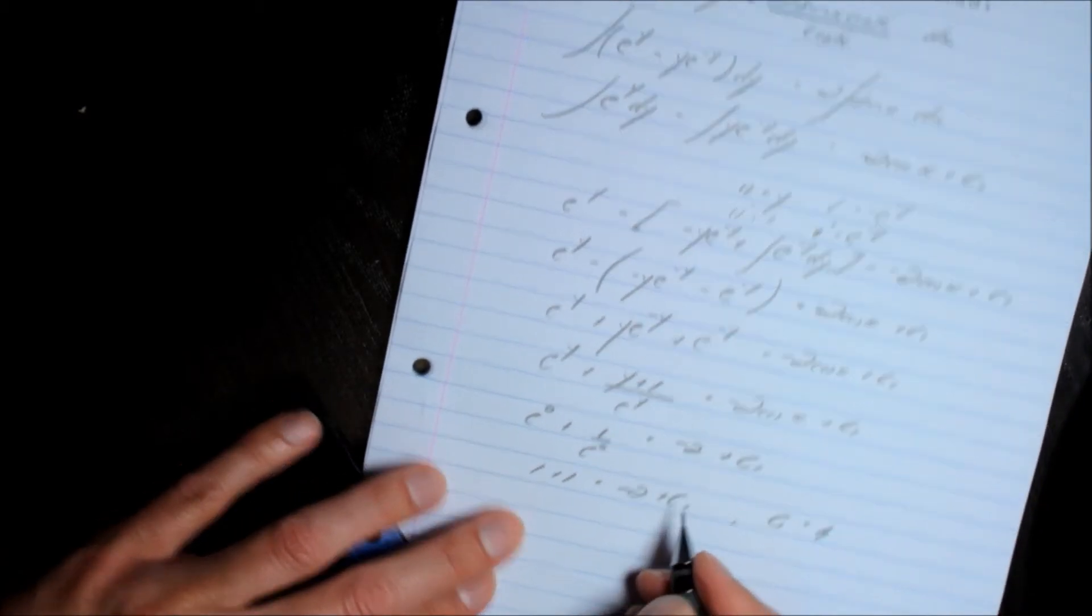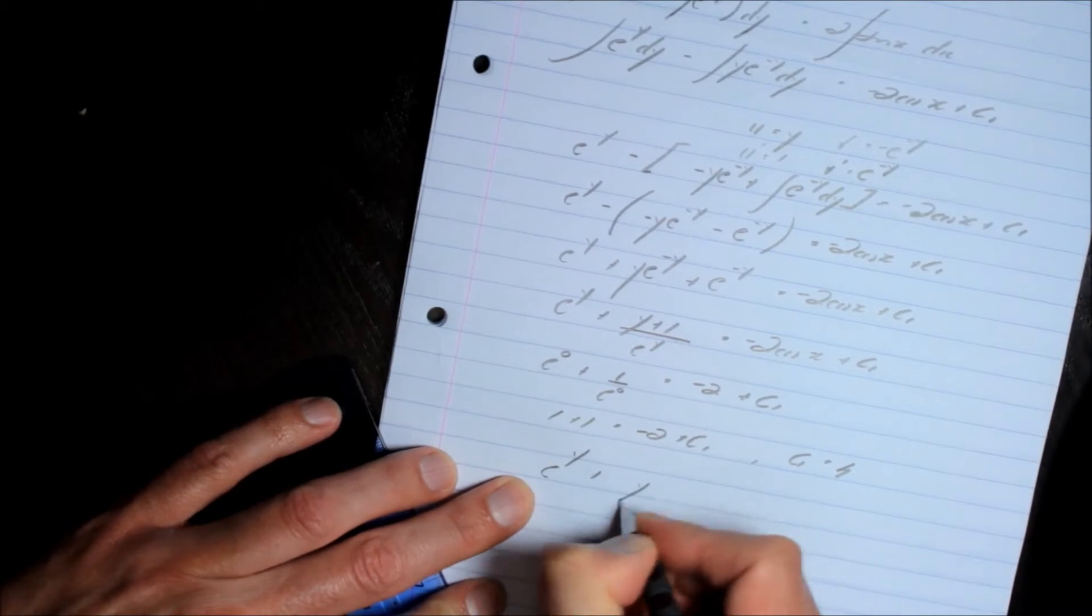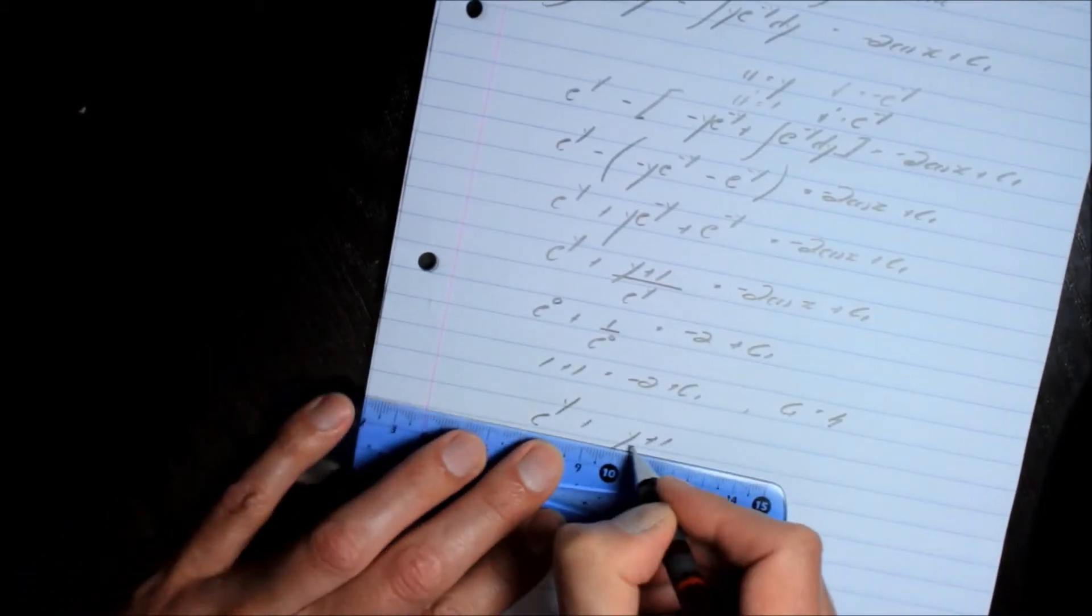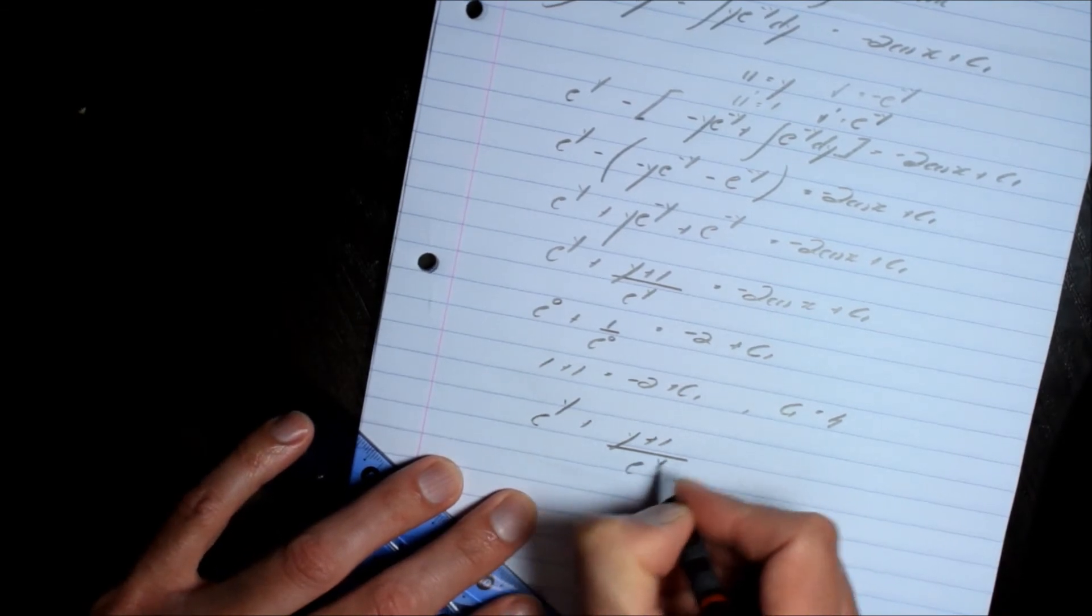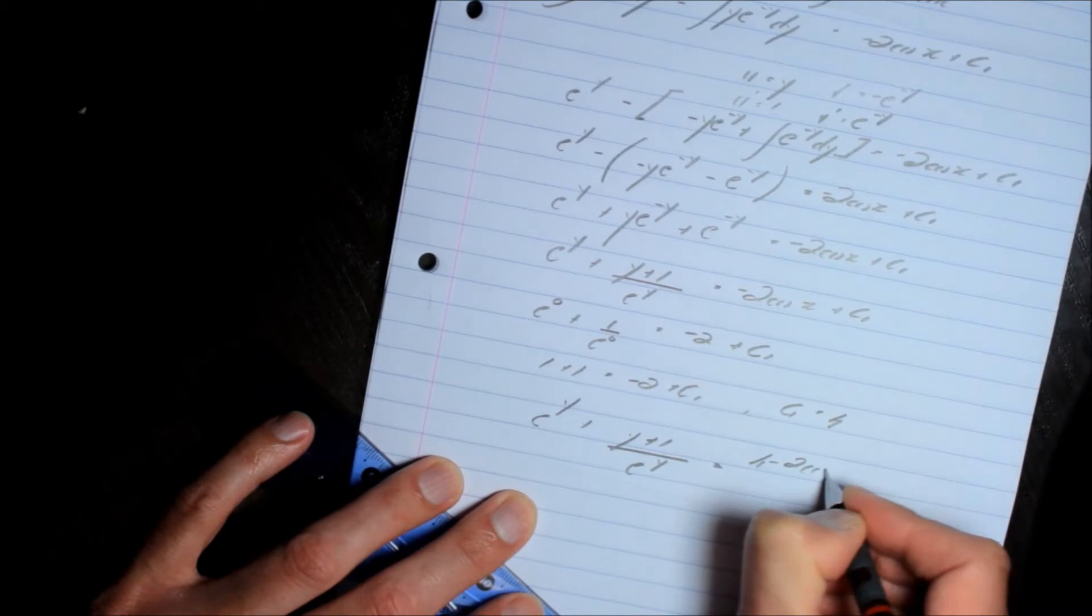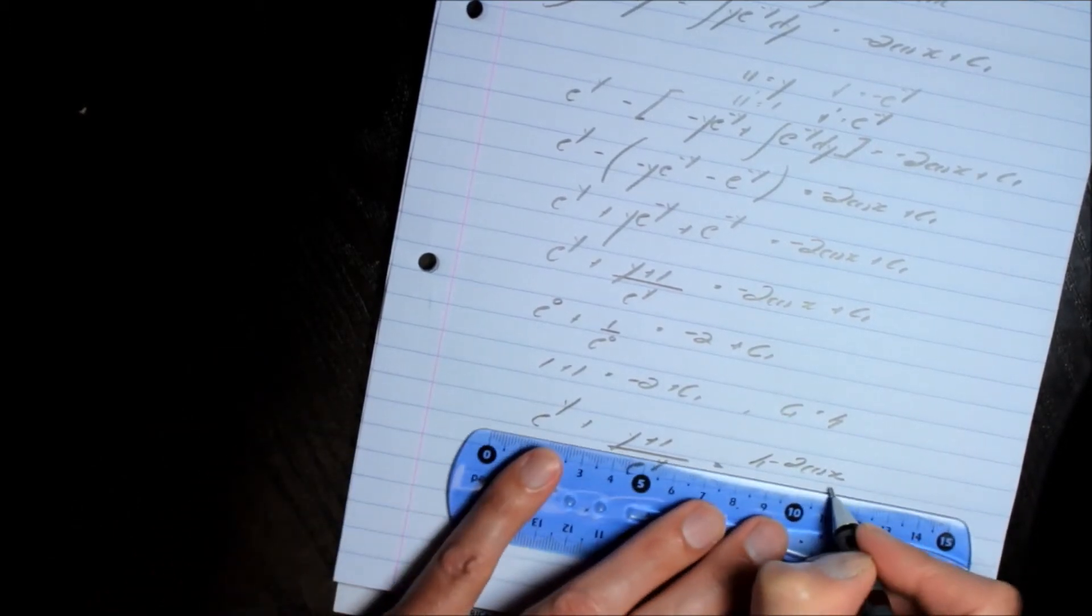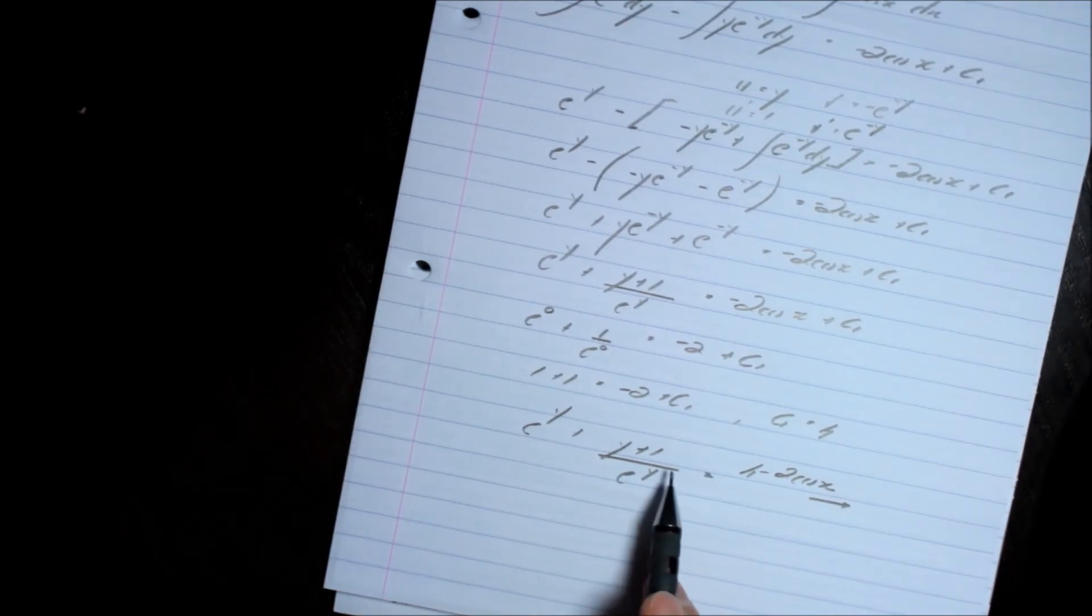I've solved for c1. So my final answer is going to be e^y plus (y+1)/e^y equals 4 minus twice the cosine of x. So that's implicit, an implicit form.